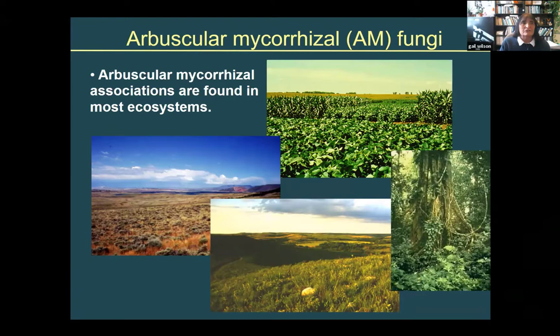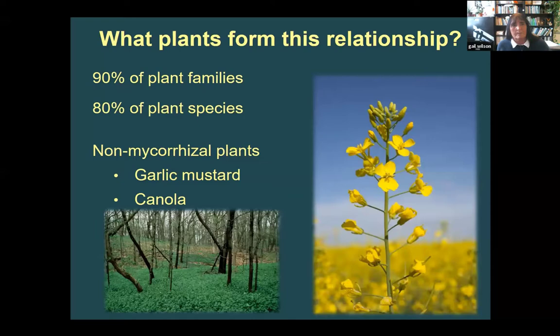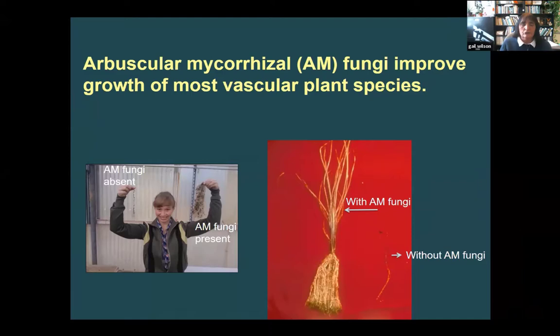These fungal-plant associations are everywhere. Most ecosystems have them, including agricultural systems, which form this mutualistic association with the fungi, as do most grassland plants. Some plants don't — about 90% of plants form a relationship with mycorrhizae. But some, like the Brassicaceae — garlic mustard, canola, broccoli — do not form a mycorrhizal association. For most plants, the association in low-nutrient soil is actually critical.